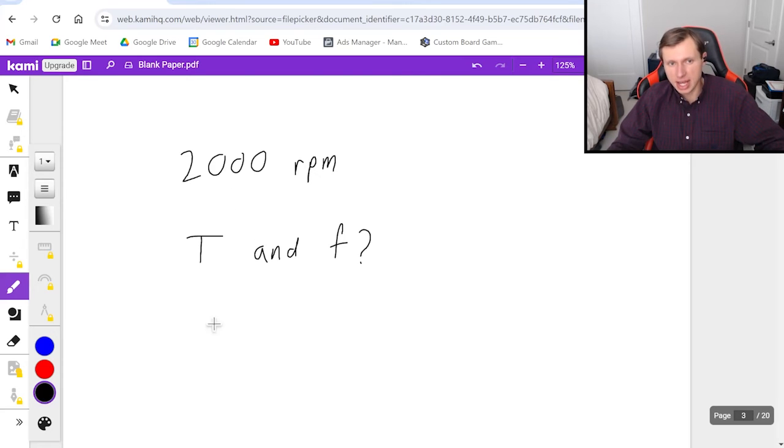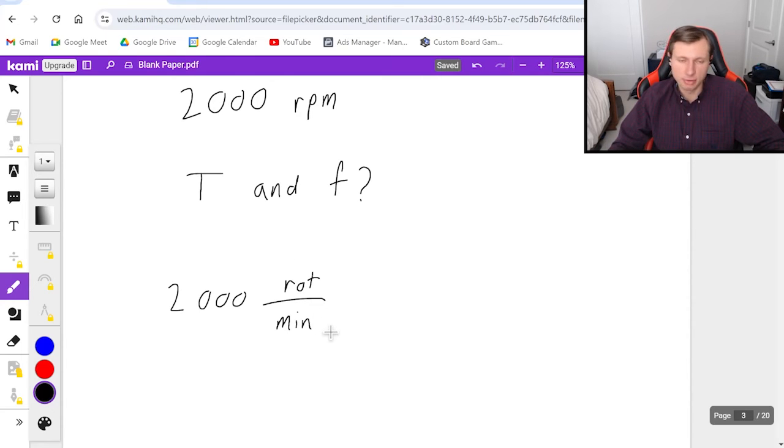So first, I am going to rewrite this as 2000 rotations per minute. And minutes is no good. I got to convert that to seconds. The way we're going to do that is we're going to say one minute in the numerator and 60 seconds in the denominator. That gets minutes to cancel out.